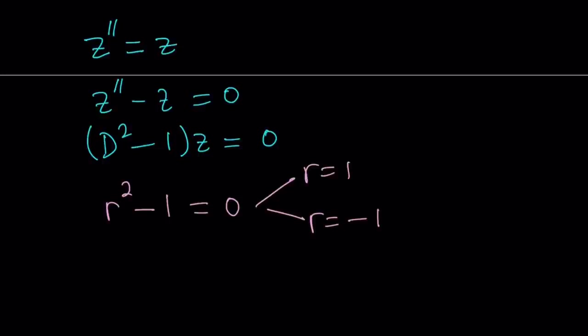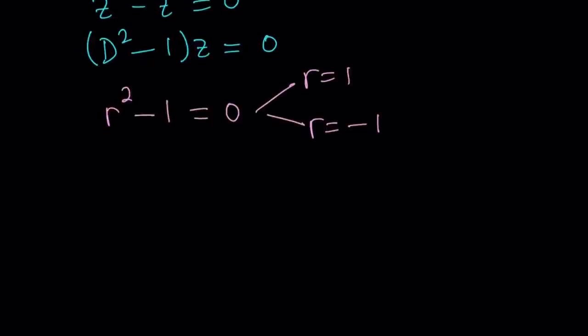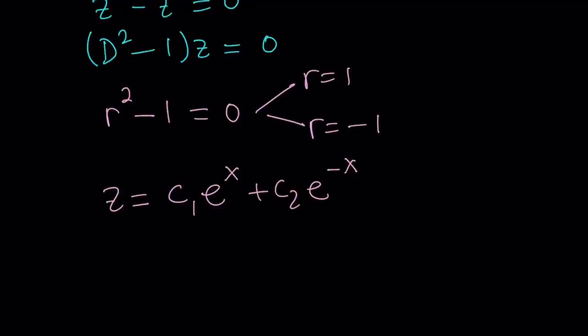From here we're going to get two solutions: r equals 1 or r equals negative 1. With these real roots, we can write the solution using constants as coefficients: c1 e to the power x plus c2 e to the power negative x. The x and negative x come from the roots 1 and negative 1 — if the roots are r1 and r2 and they are real, you write c1 e to the r1·x plus c2 e to the r2·x.